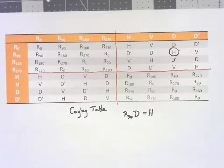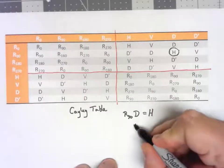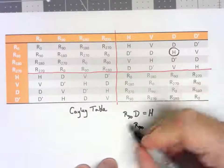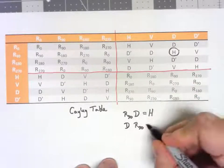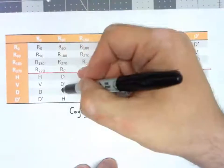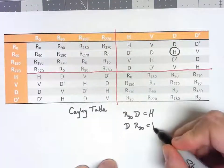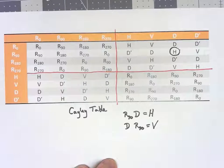If I do those in the other order though, if I do the rotation by 90, then flip across the main diagonal, that's the same as flipping across a vertical line.